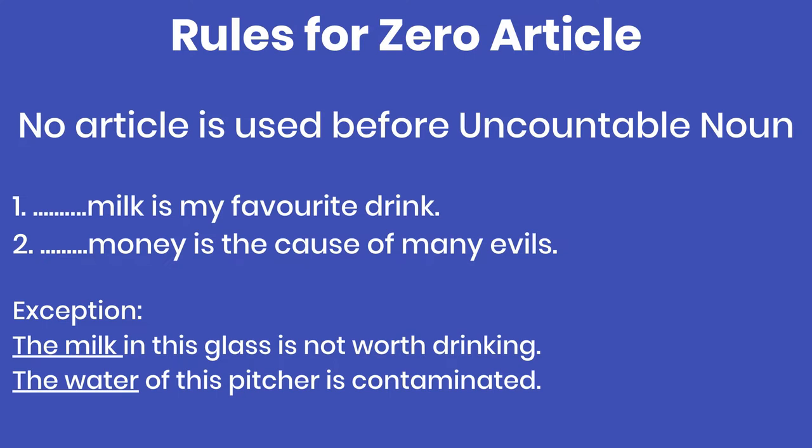As you can see in this sentence: 'Milk is my favorite drink.' And second: 'Money is the cause of many evils.' In both cases, milk and money are uncountable — no kind of article is used before them. But note a small exception: if 'milk,' which is an uncountable noun, becomes definite through some reference — particularly identified — then we use 'the.'